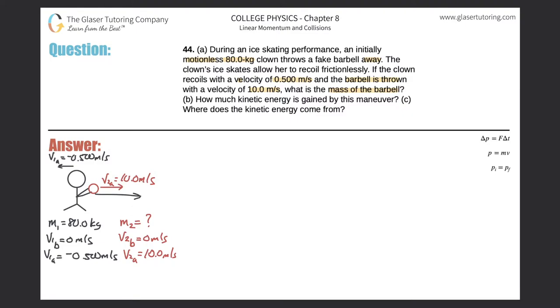the velocity of that barbell is 10 meters per second, and it's going to be positive since I chose to frame it to the right. And her recoil velocity will be negative, pointing to the left of 0.5 meters per second.